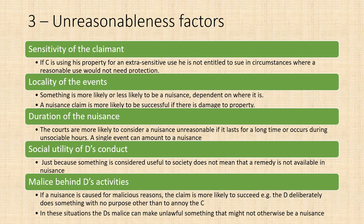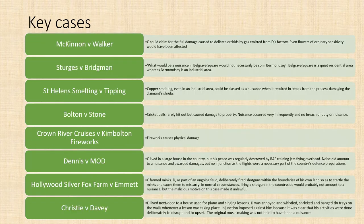Malice means that if something is done deliberately to annoy the claimant, it is more likely to succeed as a nuisance. Key cases for these unreasonableness factors include McKinnon, Stages, St Helens Smelting, Bolton v Stone, Crown River Cruises, Dennis, Hollywood Silver Fox Farm, and Christie v Davey. These are in a similar order to the previous slide in terms of the point they prove. The facts of these cases and the private nuisance explanation video will help you.